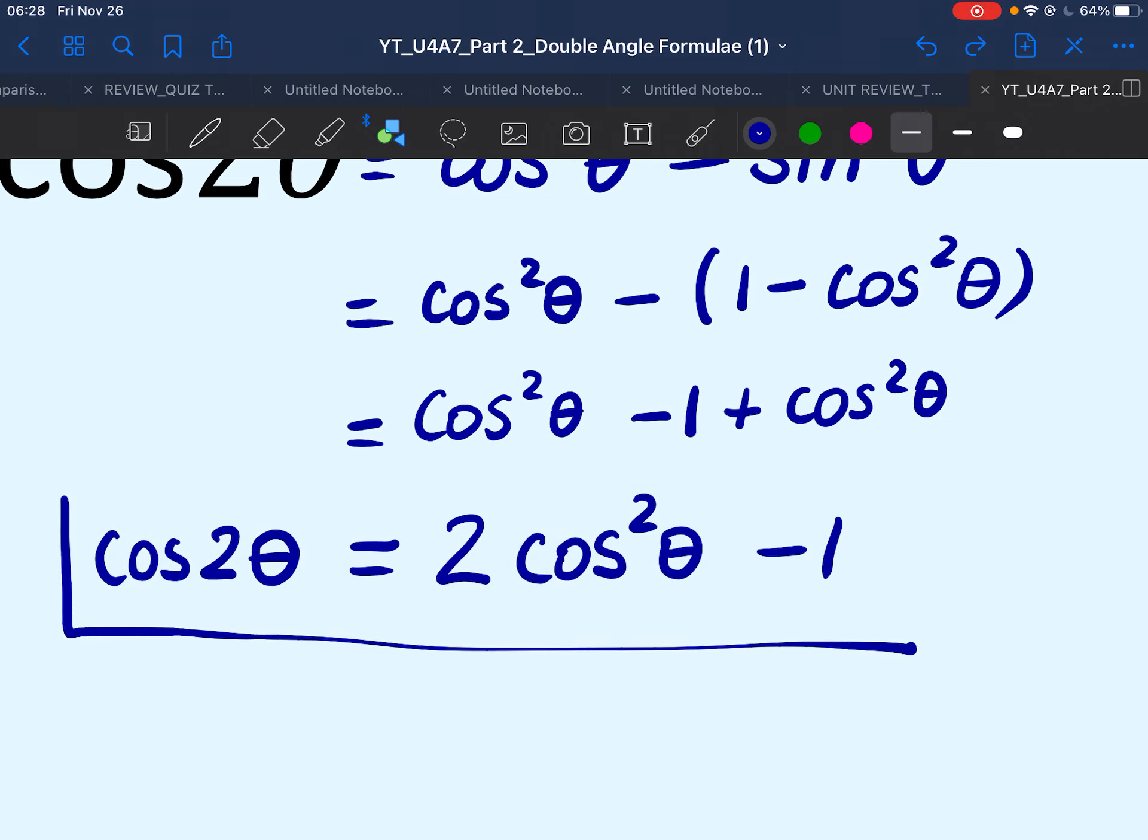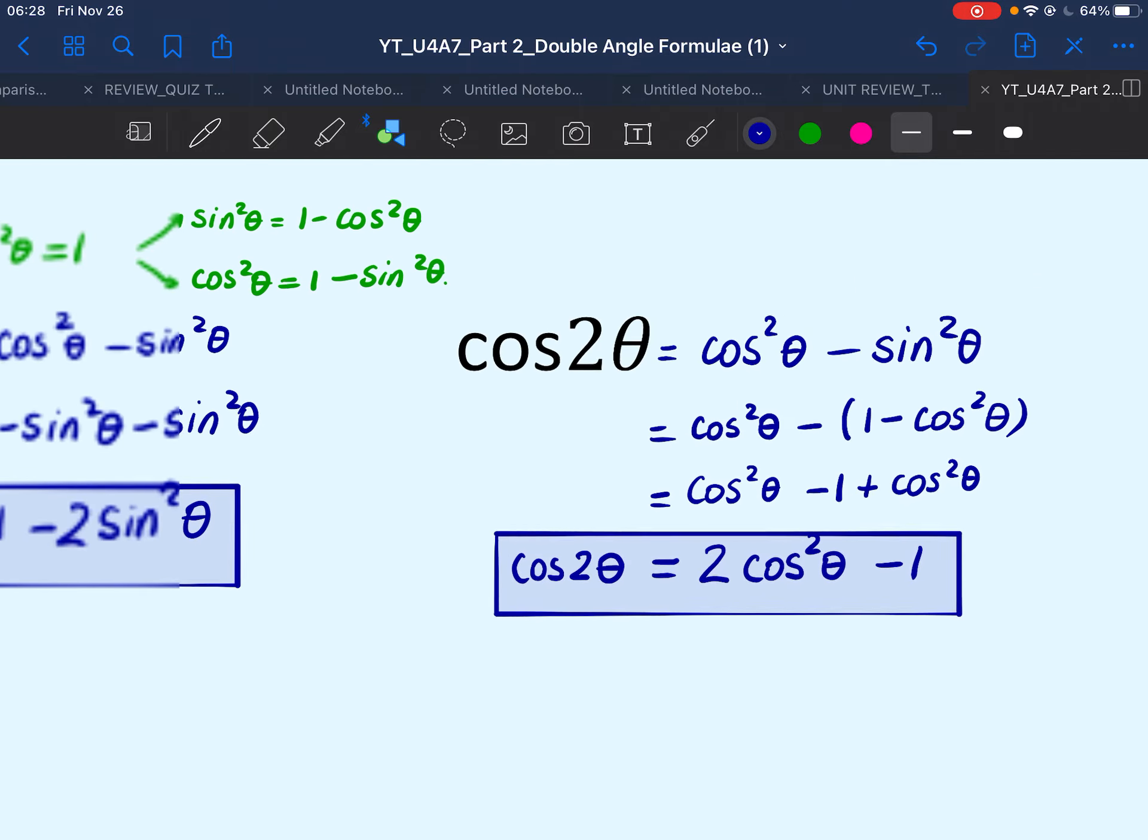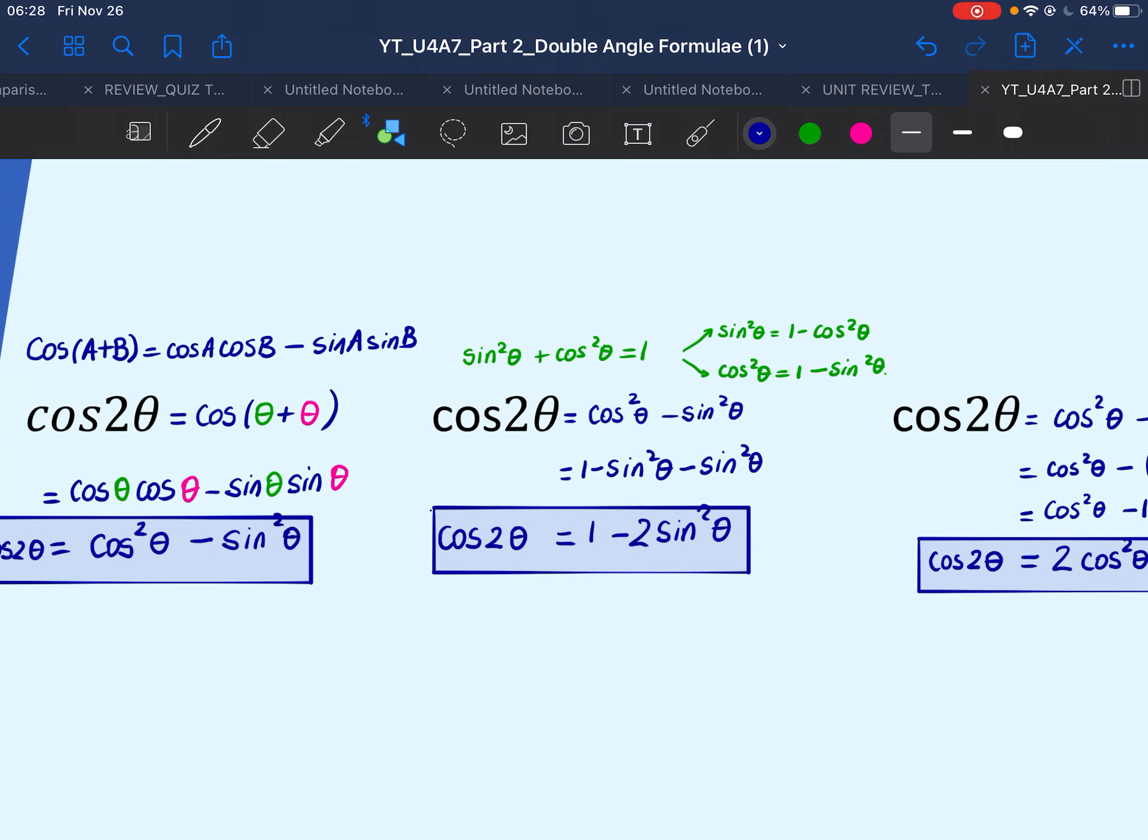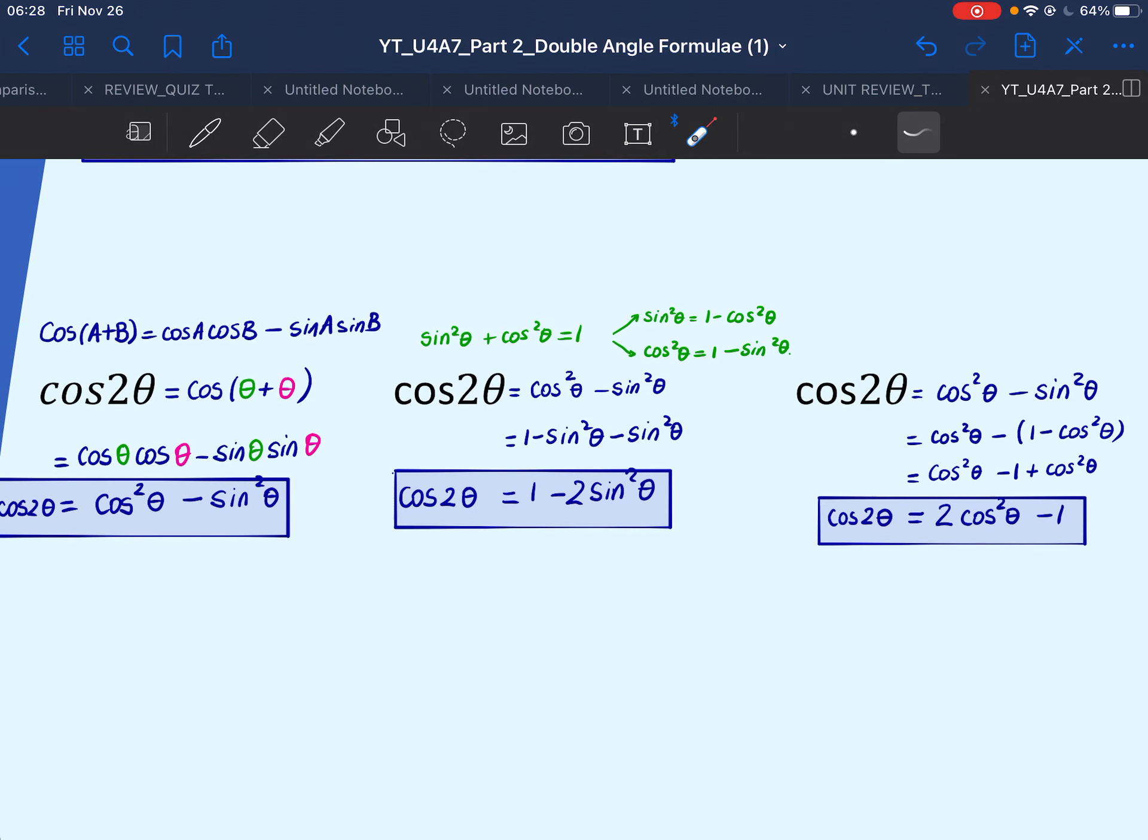So let's make this rectangle perfect. Here we go. So let's take a look at all our formulas. So we have three formulas for cos double theta. One that involves sine squared and cos squared. One that involves only sine squared. And another one that involves just cosine squared.